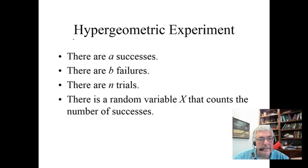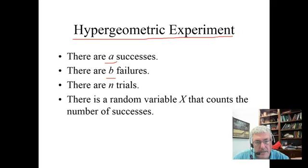This is an example of what's called a hypergeometric experiment. A hypergeometric experiment has the following conditions: there are A successes, there are B failures, there are N trials all together, and we have a random variable X that counts the number of successes.